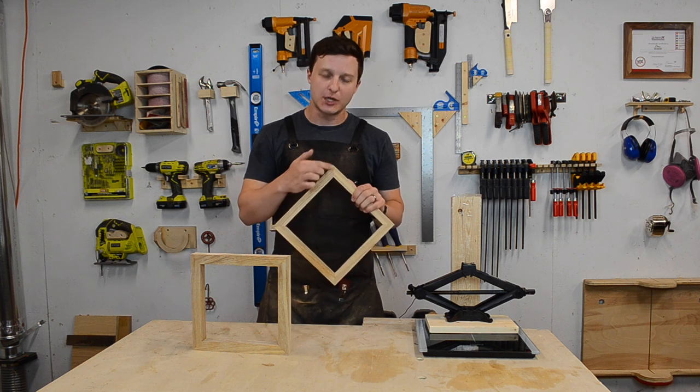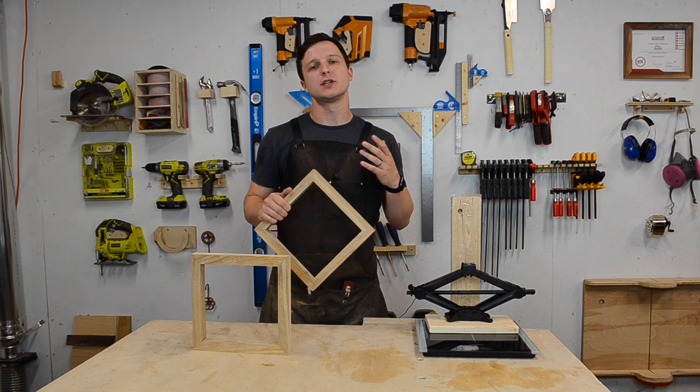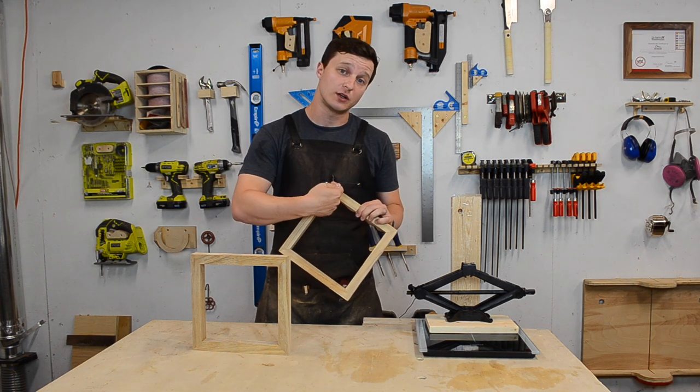Every woodworker knows that a miter joint, like you would find in the corner of a picture frame, is structurally weak. That's because it's basically end grain that is glued to end grain.